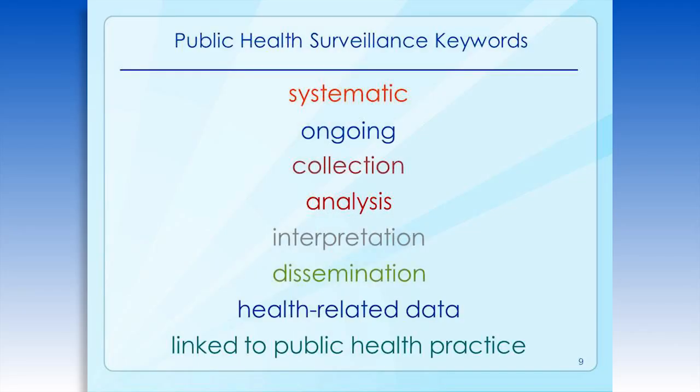The next term is ongoing. The ongoing nature of surveillance data collection is one attribute that distinguishes it from research data collections. Data collection for research purposes is tied to the duration of the study, while surveillance is ongoing. Although things like definitions, instruments, and data fields may change over time, the systems generally keep chugging on. It also does not mean continuous. Some systems, such as influenza and arbovirus surveillance systems, are seasonal.